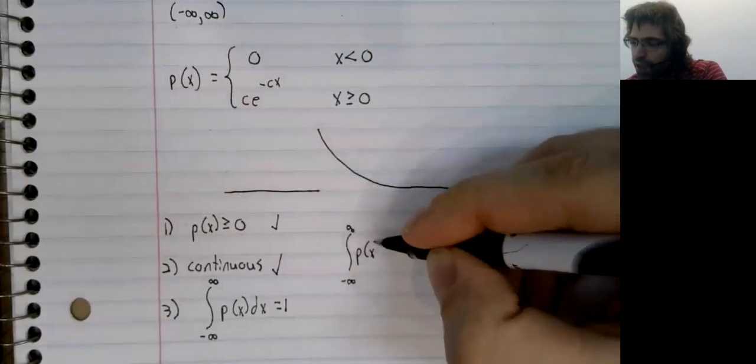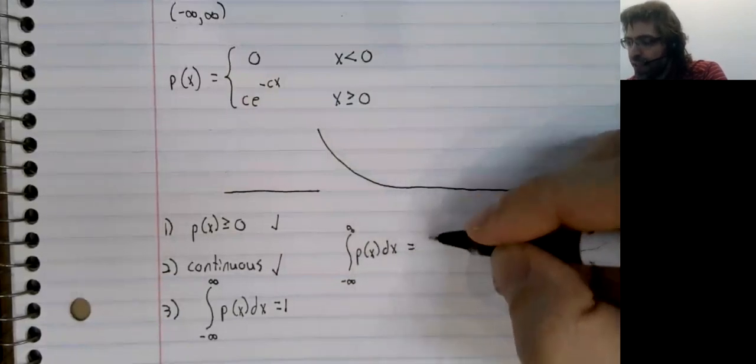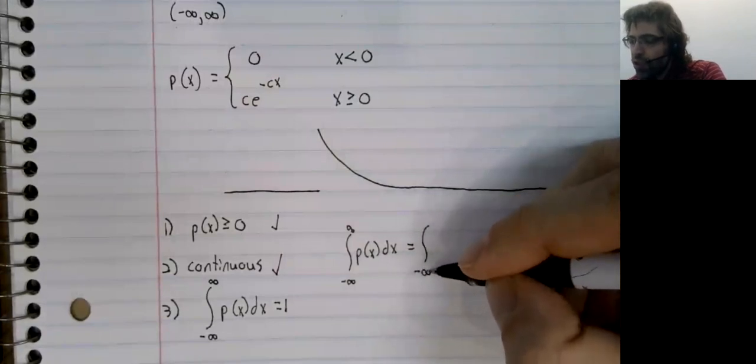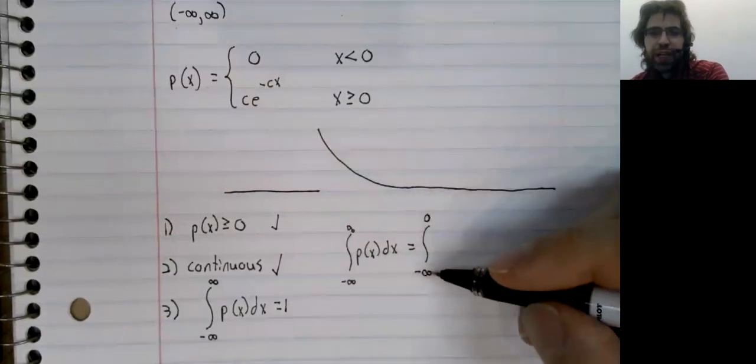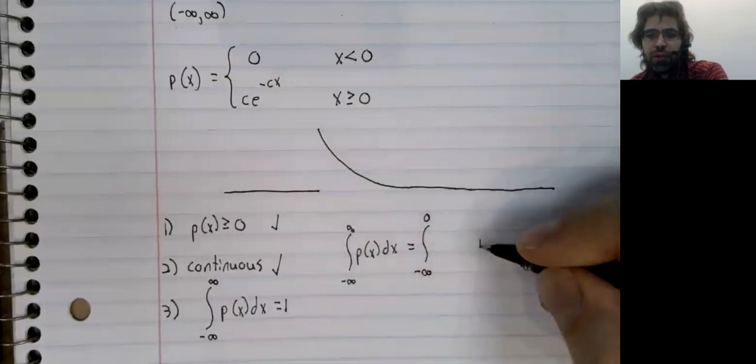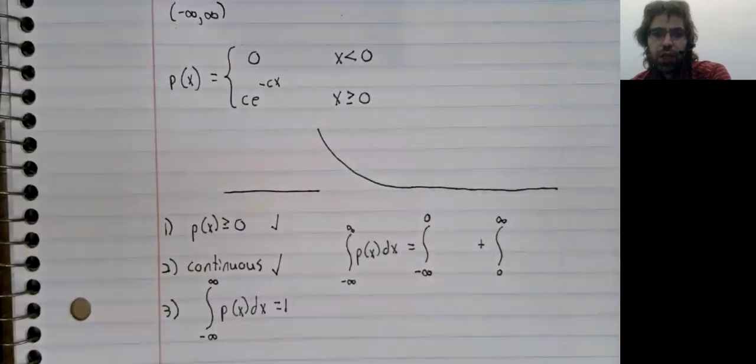By definition, we can, and in fact must, break this up into two integrals. We'll go from negative infinity to zero, then the integral from zero to infinity.